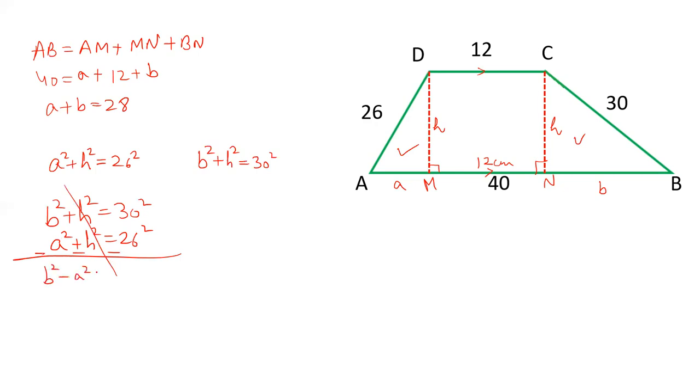So B square minus A square is equal to 30 square minus 26 square, which can be written as B minus A, B plus A is equal to 30 plus 26 and 30 minus 26. And the value of A plus B is 28. B minus A is equals to 56 into 4. So B minus A is equals to 8.